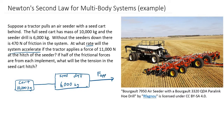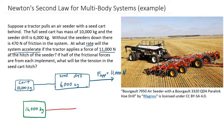The tractor is not really part of the system here because we're told the tractor applies a force of 11,000 newtons at the hitch of the seeder. The tractor needs more force to overcome its own friction and pull itself, but what remains at the hitch is 11,000 newtons to pull the implements. For the first question, we can treat this like a single object with a total mass of 16,000 kilograms, an applied force of 11,000 newtons, and a frictional force of 470 newtons.